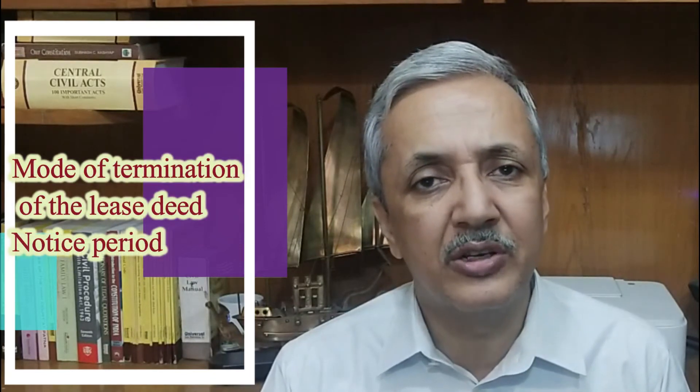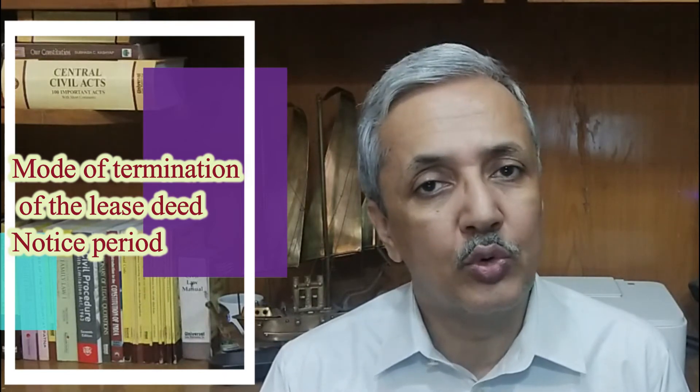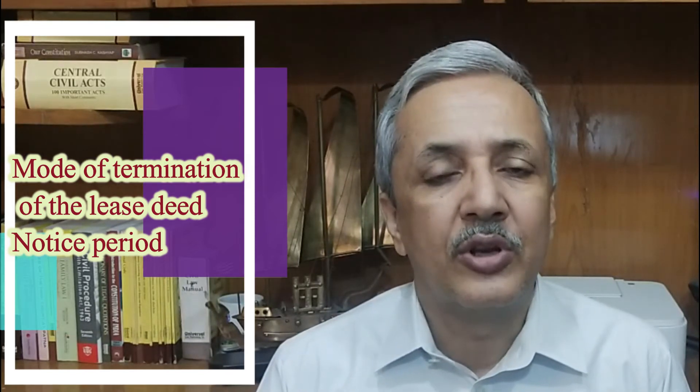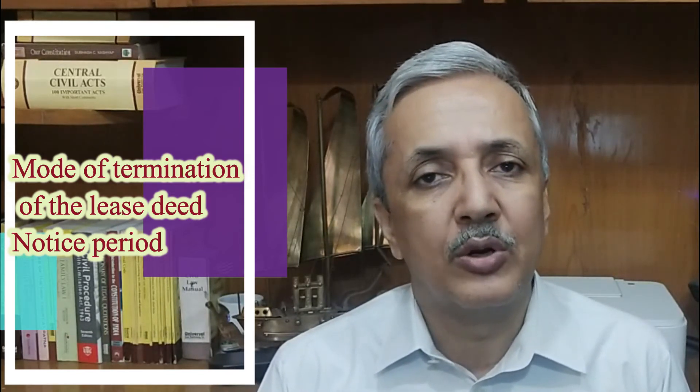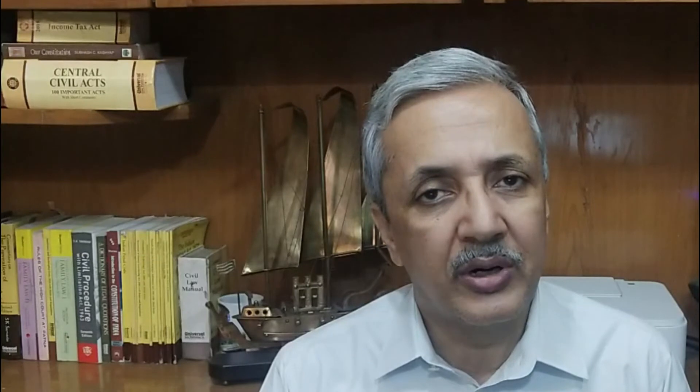The next important aspect is the mode of termination — how the tenancy can be terminated. How many months' notice is required? One month, two months, three months? What constitutes automatic termination? All these aspects need to be mentioned very specifically in the lease deed. In a lease of three or six years, typically three to six months is the notice period, except for eventualities like default in rent, where you can immediately take possession of the property.